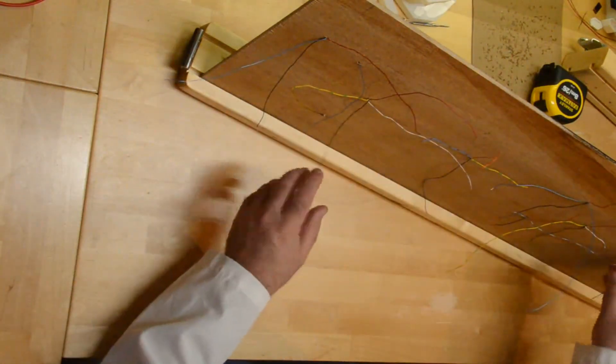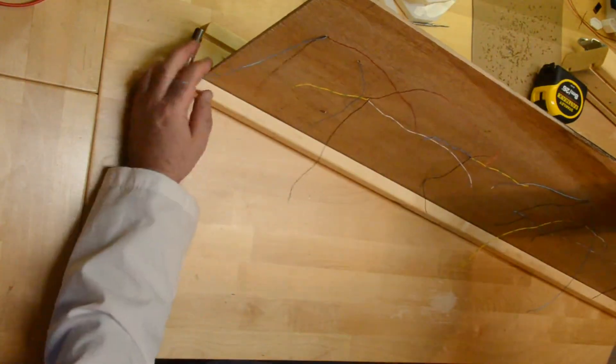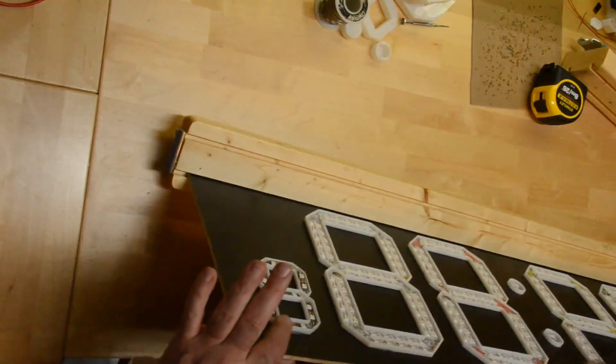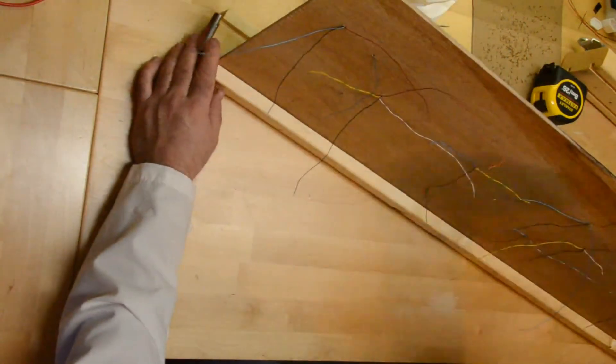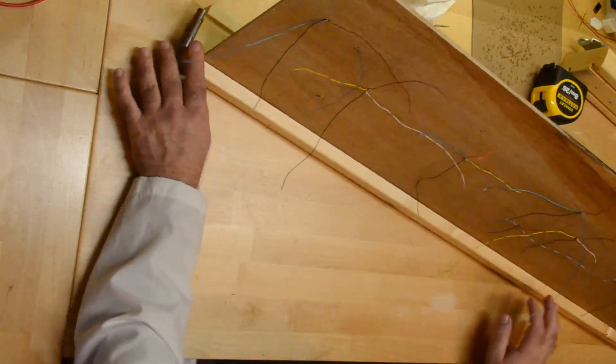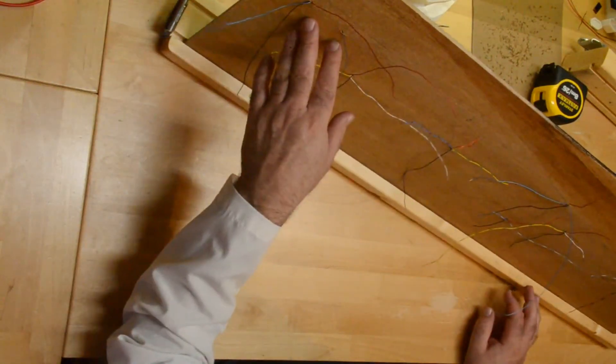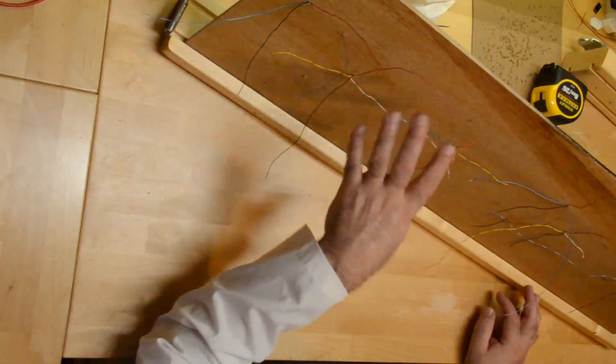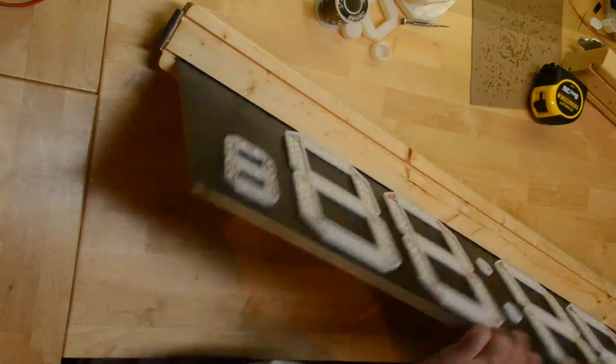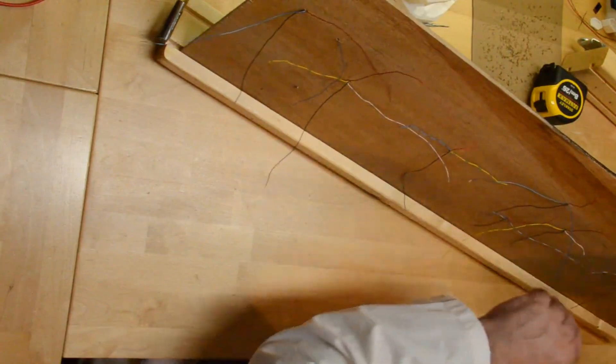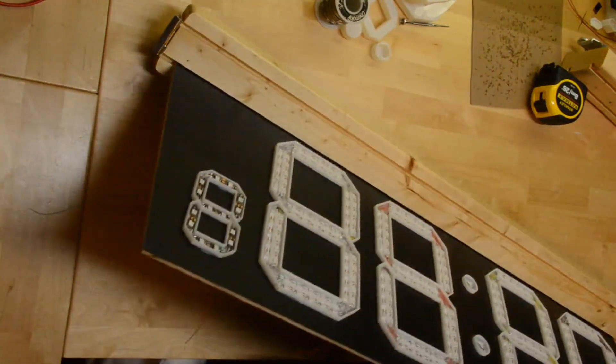I'm getting all the wires ready to be connected together for all the digits now. As you can see, this is the little one and so on. The way the data is going to flow through my sign is it'll go in the little one first. Then, it'll flow into two of the big digits, which are these two right here. Then, it'll flow out of this digit. It'll go into the two colon dots. Then, it'll flow into the other two digits.